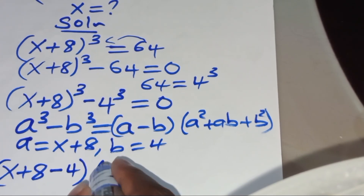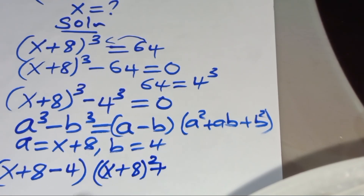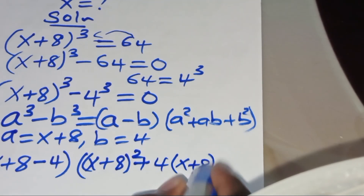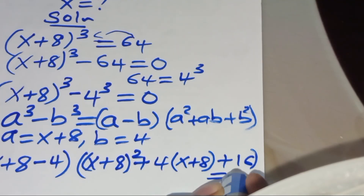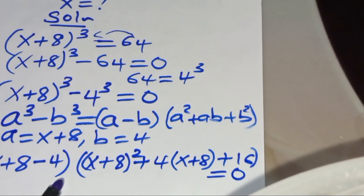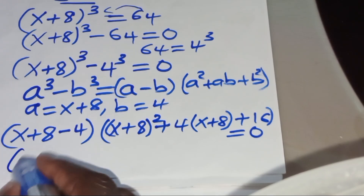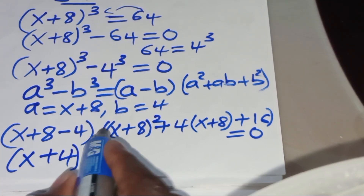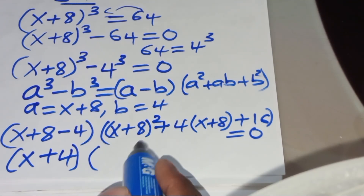So we'll have (x + 8 − 4) multiplied by [(x + 8)² + 4(x + 8) + 4²], which is 16, equal to zero. This simplifies to (x + 4) times the quadratic expression equal to zero.